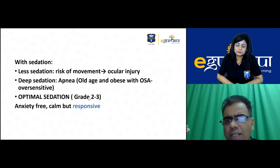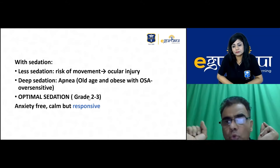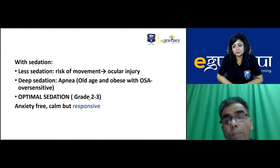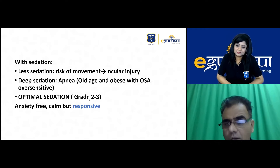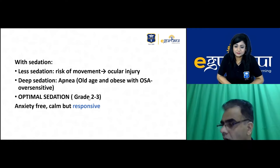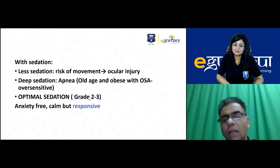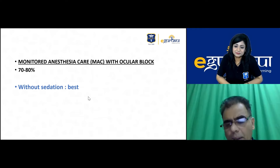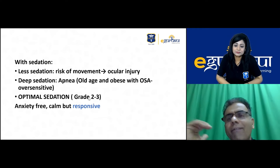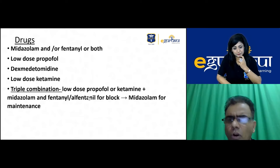Using observational sedation grades from 1 to 5, the target level should be grade 2 to 3 — patient should be drowsy but responsive to commands. This is a topic of controversy between ophthalmologists and anesthetists. If sedation is required, drugs used include midazolam, fentanyl, or a combination of both.